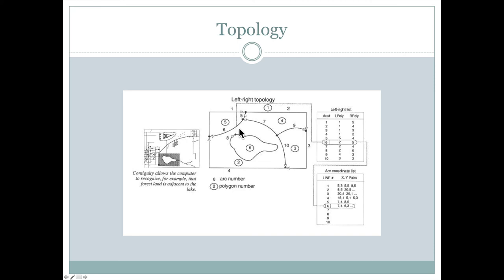As we'll see later, if we took another polygon layer and cut it with this one, we might create new polygons. Every time two lines cross, we would have to put a new node in and rebuild each of the lines associated with the new polygons. That would be rebuilding the topology associated with that new analytical GIS layer.